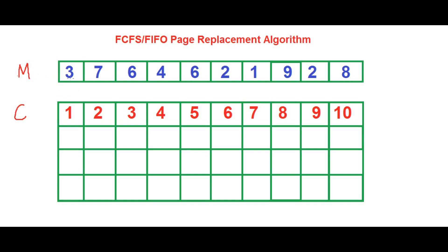Let's start. First, we have 3 which needs to come into the cache memory, and since the cache memory is empty, it is brought onto the cache memory directly — and this is actually a page fault. A page fault is when the processor looks for some data in the cache memory and it is not found, so it refers to the main memory, brings that data into the cache memory, and then starts accessing the cache memory for that location or data.